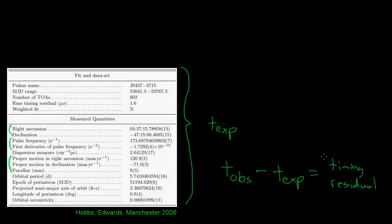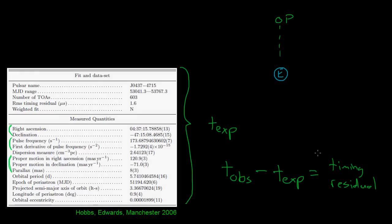At this point, some of you might be saying: how do we really know that this timing residual comes from a gravitational wave, and isn't just some problem with our timing model or some unknown change in the pulsar? This is a very important issue. We are constantly correcting and improving the timing models for our pulsars, and it is true that pulsars can be noisy and have unexpected changes. So if we're only looking at a single pulsar, it's almost impossible to distinguish between a gravitational wave and an error in our timing model.